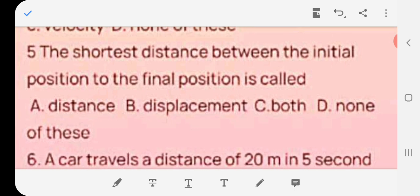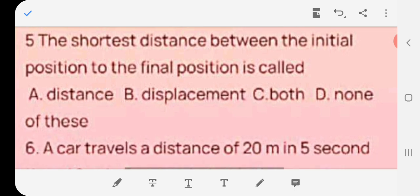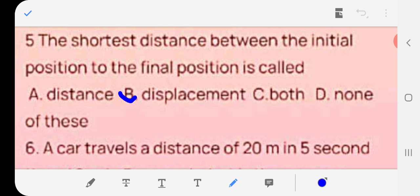The shortest distance between the initial position to the final position is called A distance, B displacement, C both, D none of these. The correct answer is displacement. This question is very important.